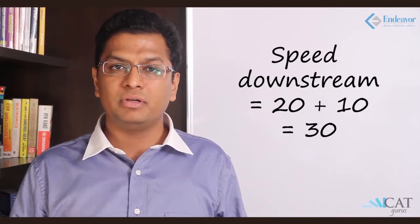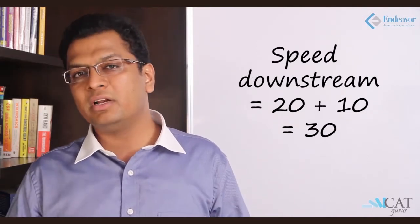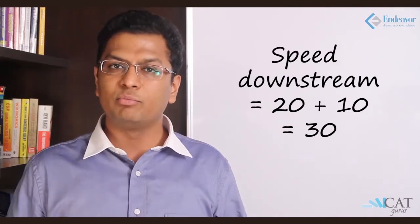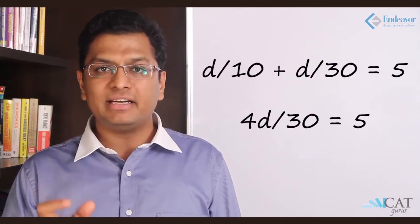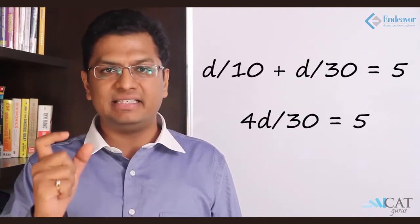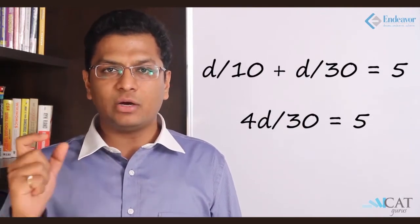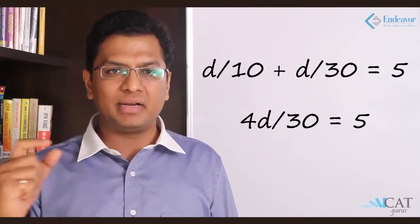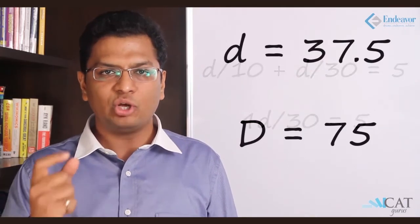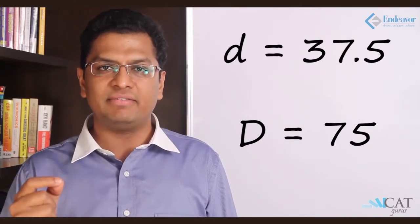What about downstream? Downstream, even if you don't move, the stream will make you move at 10. So if you are also rowing, it will add up, and you will move at 30 kilometers per hour. Using the formula time equals distance divided by speed: time upstream is d divided by 10, time downstream is d divided by 30. Adding the two gives 5 hours: d/10 plus d/30 equals 5. Solving, we get d equals 37.5, so the total distance covered is 75 kilometers.